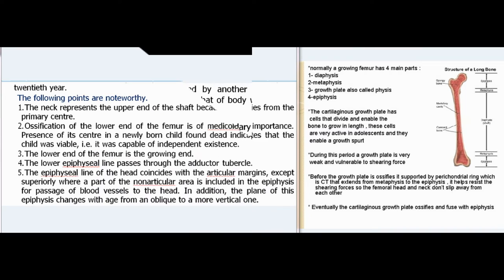Noteworthy points: The neck represents the upper end of the shaft because it ossifies from the primary center. Ossification of the lower end of the femur is of medico-legal importance—presence of its center in a newly born child found dead indicates that the child was viable, i.e., capable of independent existence. The lower end of the femur is the growing end. The lower epiphysial line passes through the adductor tubercle. The epiphysial line of the head coincides with the articular margins, except superiorly where a part of the non-articular area is included in the epiphysis for passage of blood vessels to the head, and the plane of this epiphysis changes with age from oblique to more vertical.